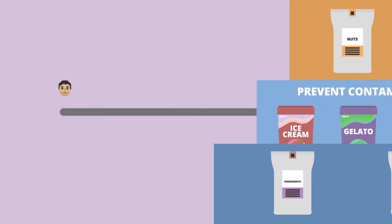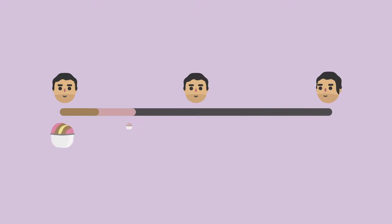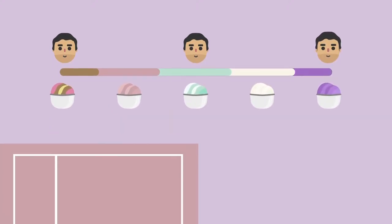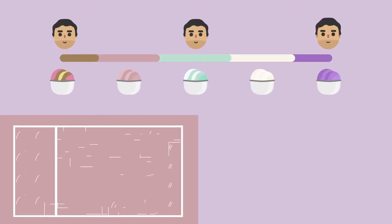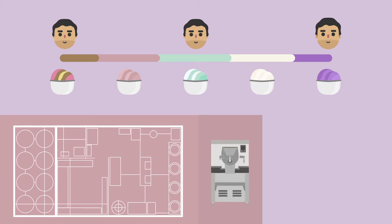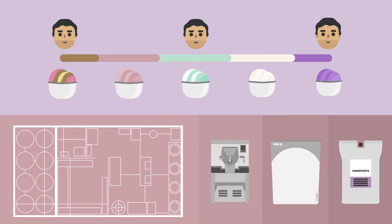Knowing how automated you want your production line to be, and the range of flavors you want to make before you start, will allow you to construct your facilities with the appropriate spaces, and purchase the correct equipment, supplies, and ingredients to create your own unique line of frozen desserts.